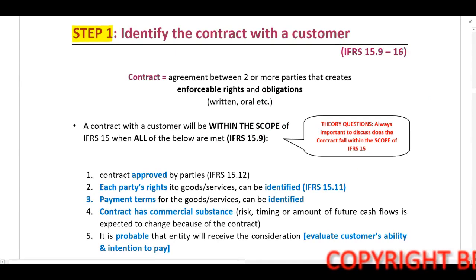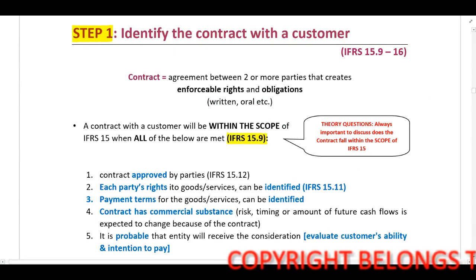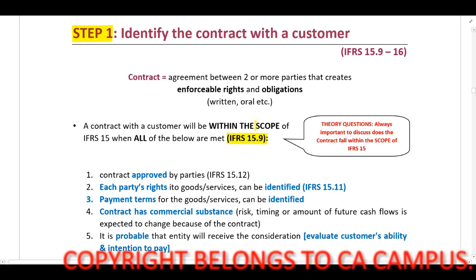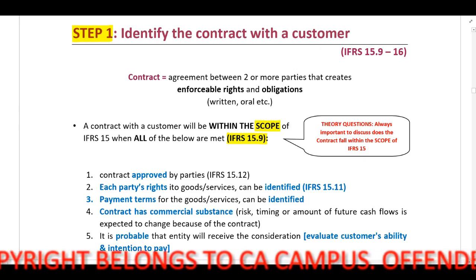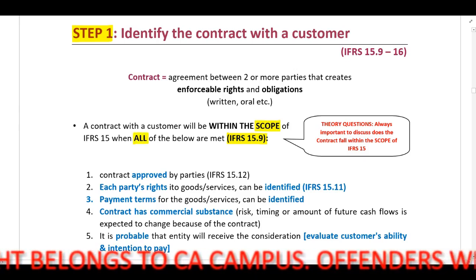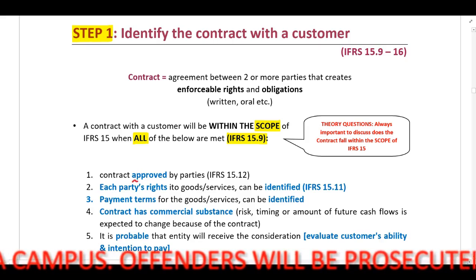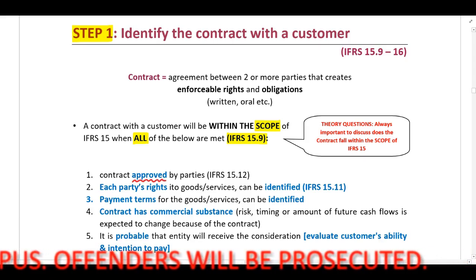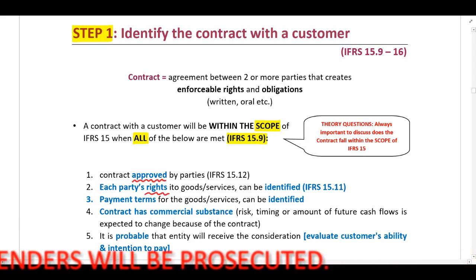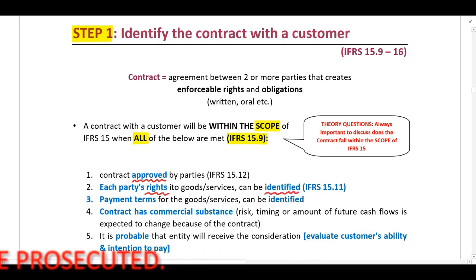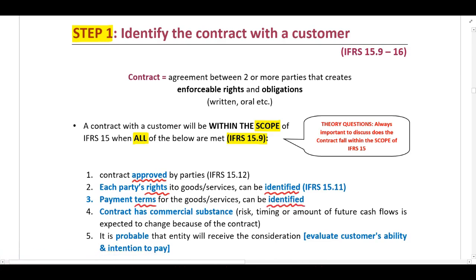IFRS 15 paragraph 9 indicates that when there is a contract, it should be within the scope of IFRS 15 and should meet all of the following requirements: the contract should be approved by all of the parties involved; each party's rights in terms of goods or services can be identified in the contract; the payment terms should be identified in the contract; and the contract should have commercial substance.